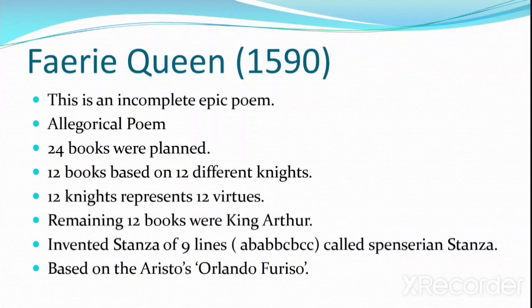Another important work by Edmund Spenser is The Faerie Queene, published in 1590. A very important point about The Faerie Queene is that it is an incomplete epic poem and also an allegorical poem. It was actually planned to be written in 20 books, but Spenser could not complete them.